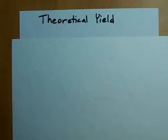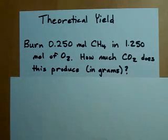How do you calculate the theoretical yield? An example problem could read 0.25 moles of CH4 reacting with 1.25 moles of O2. How much CO2 could you get out of this in grams?